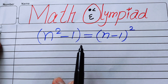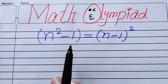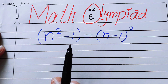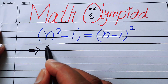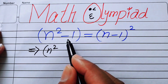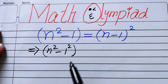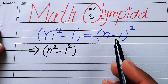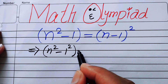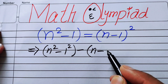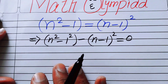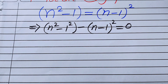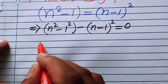The very first thing we are going to do is rewrite the left hand side. Here in the left hand side you have n squared minus one, and I can write the one as one squared. Then we move the right hand side term to the left hand side — it becomes negative — and we get n minus one whole squared equals zero.